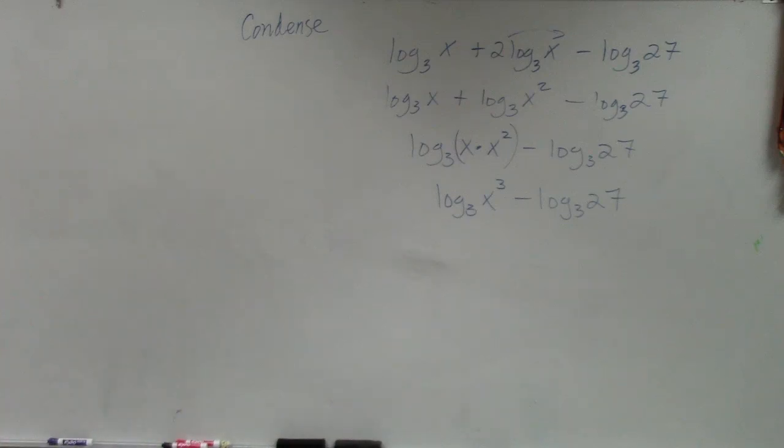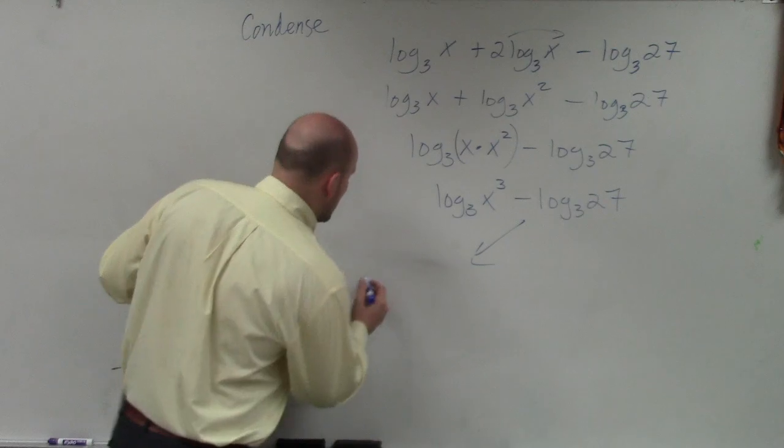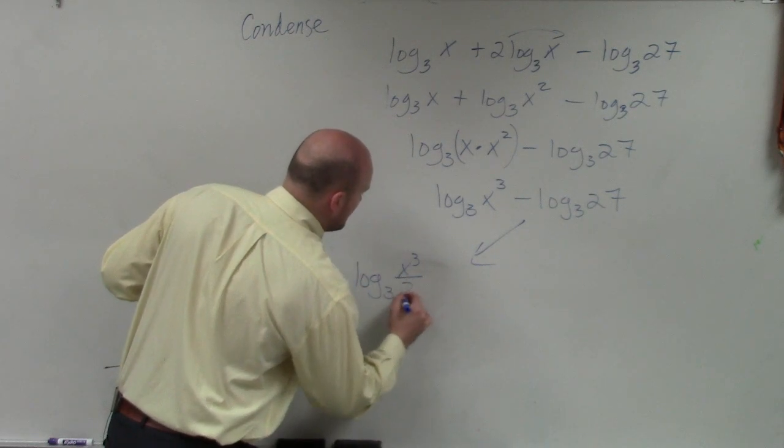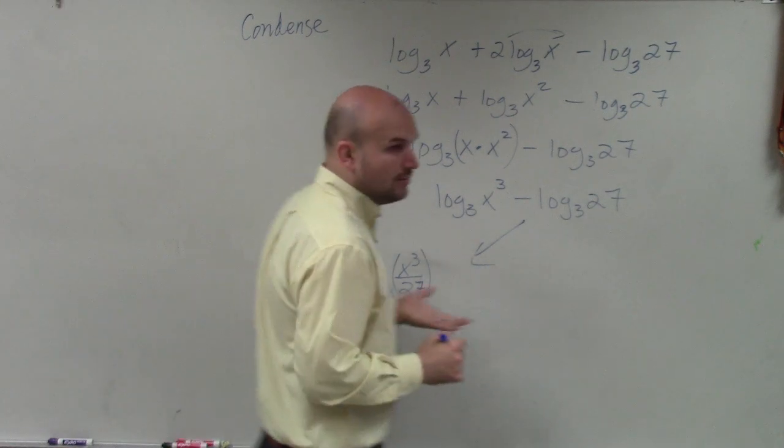There's two different ways that I'd like you guys to understand how we can rewrite this final answer. You now see that you have the division, right? Or I'm sorry, subtraction. So you could use the division property, which would be log base 3 of x cubed over 27, which would look like this.